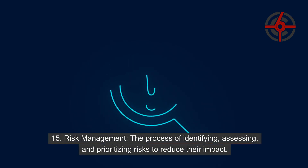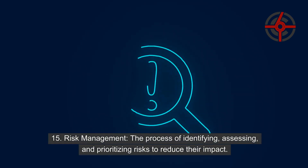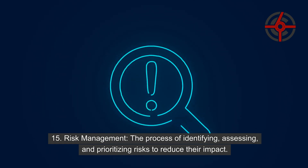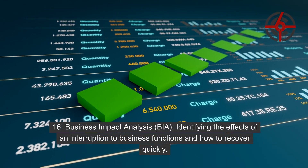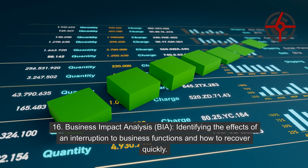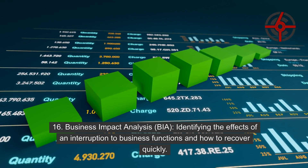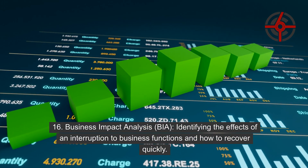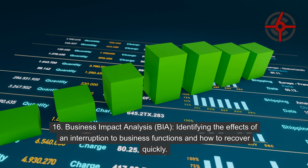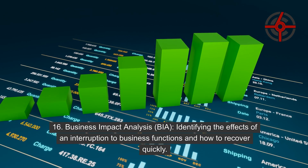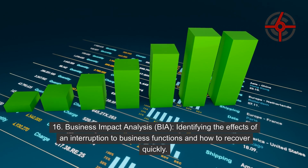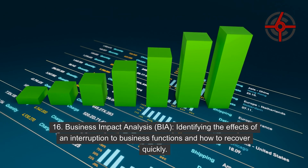15. Risk Management: The process of identifying, assessing, and prioritizing risks to reduce their impact. 16. Business Impact Analysis (BIA): Identifying the effects of an interruption to business functions and how to recover quickly.